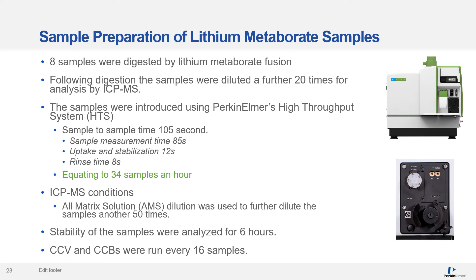During the study we also utilized the Nexion's all matrix solution (AMS) dilution capability, available on all Nexion ICP-MS instruments. This is an online argon dilution that occurs just before the sample enters the plasma. Because of the high TDS of these samples we added a dilution of about 50 times. However, this dilution is applied to everything including the calibration, CCVs and CCBs, and therefore does not need to be accounted for in the final concentration calculations. The stability of these samples was analyzed for six hours with CCVs and CCBs run every 16 samples.